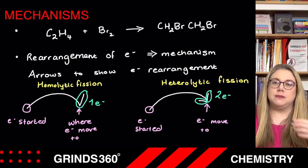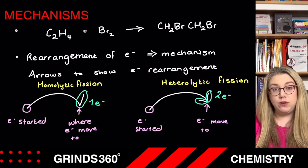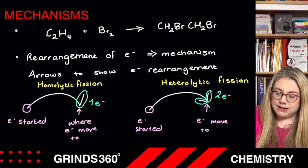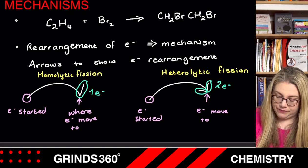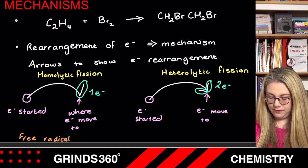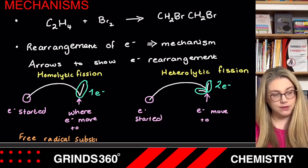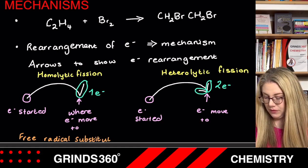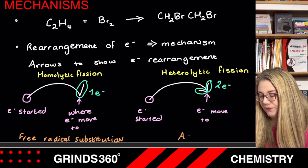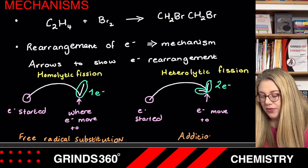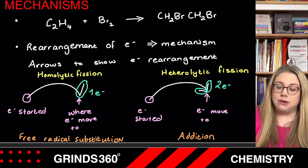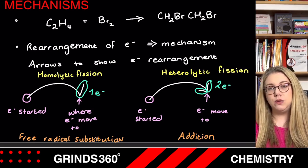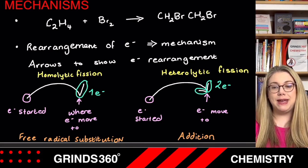We have two different mechanisms to study at Leaving Certificate level, and it's actually one of each. When you have free radical substitution, that is homolytic fission, so it uses the half-headed arrows. The second type of reaction is an addition reaction, and that one uses the double-headed arrow. Those are the two different types of arrows we will see. We won't actually use them in this class — I'll show you how to use them in a separate video on how the mechanisms actually work.